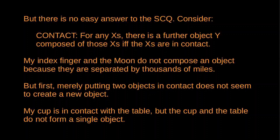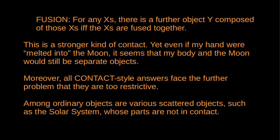These thoughts suggest we need something stronger than contact. An alternative suggestion is that composition requires a kind of fusion: for any Xs, there is a further object Y composed of those Xs if and only if the Xs are fused together — or as Peter van Inwagen put it, the objects must melt into each other in a way that leaves no discernible boundary. But this still seems too weak, because even if you were to fuse my hand to part of the moon with some unbreakable glue, it still seems that my body and the moon would not compose a single object. More importantly, there's a more serious problem for any contact-style answer — they are all too restrictive.